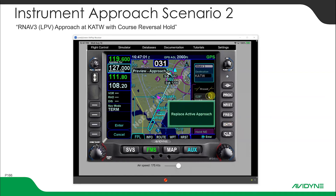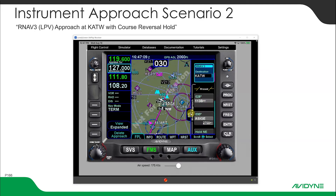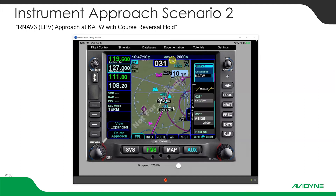It says 'Do you want to replace the active approach?' I can touch anywhere in the green box or hit enter to approve that. Now it knows it's got an LPV approach armed again.